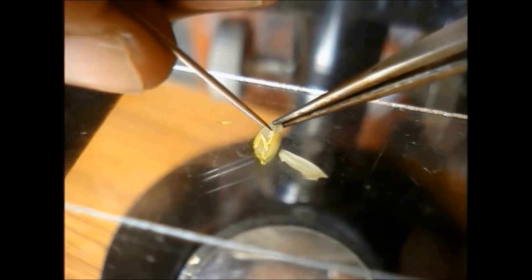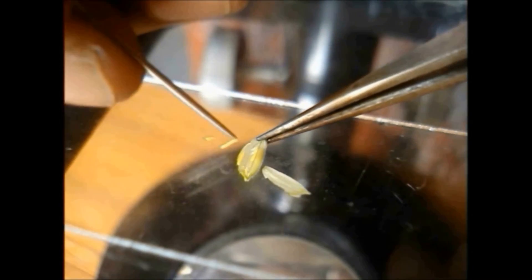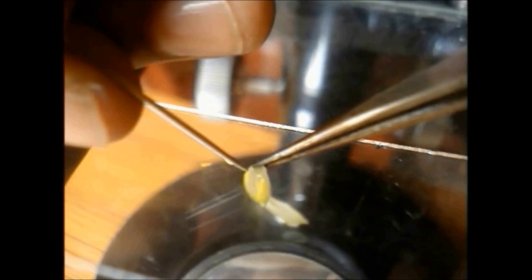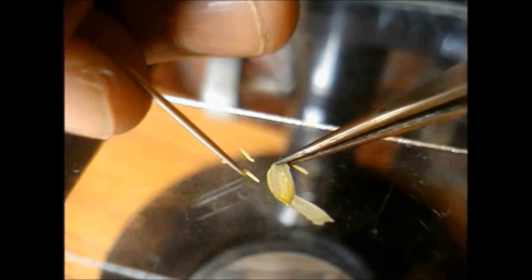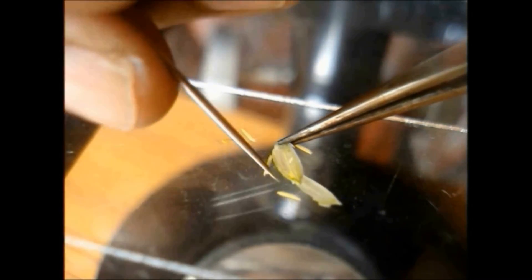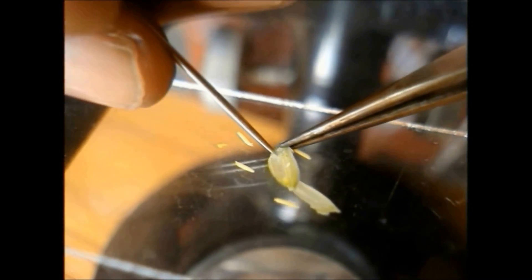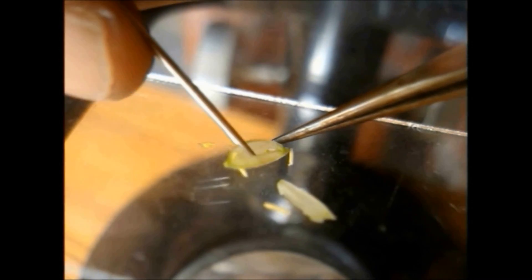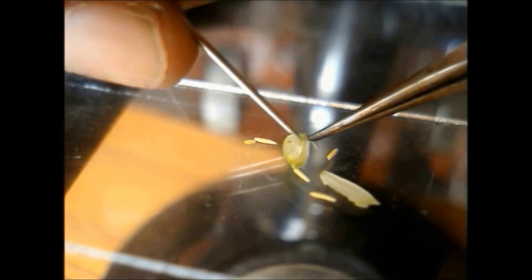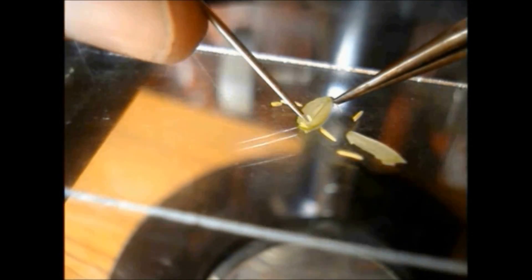Gently take the anthers out by using forceps and needles. After that, the rice pistil is taken out from the flower carefully, without causing any damage to the ovary. Here, the rice pistil is otherwise known as the carpel.